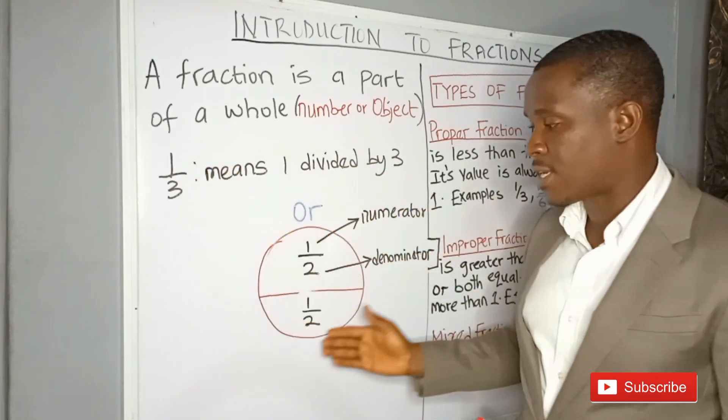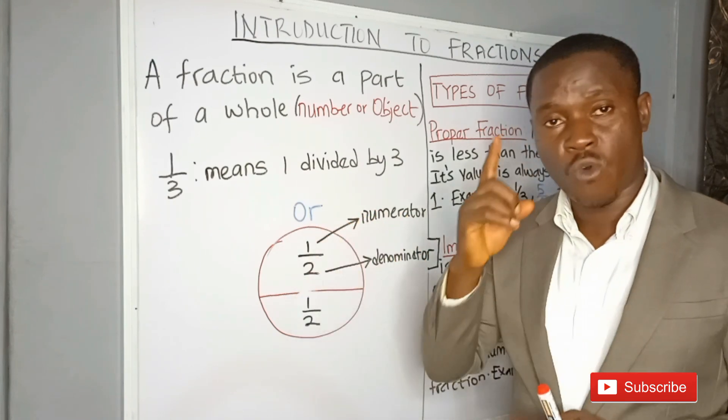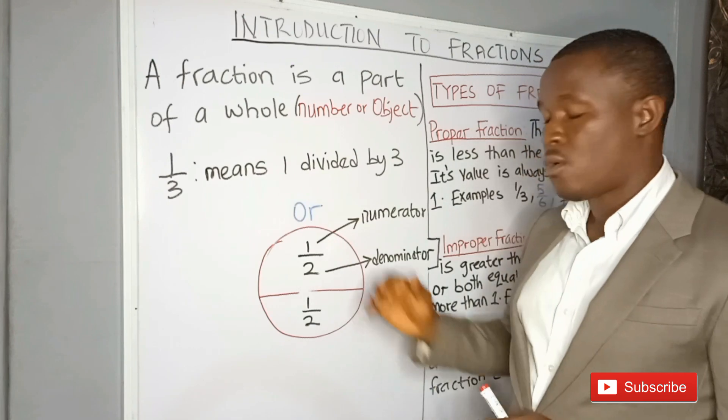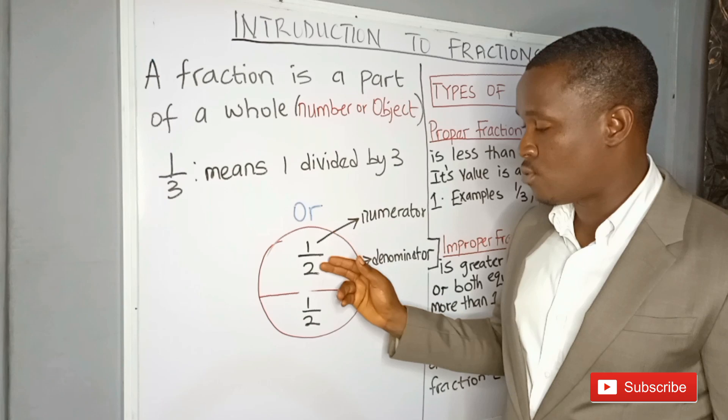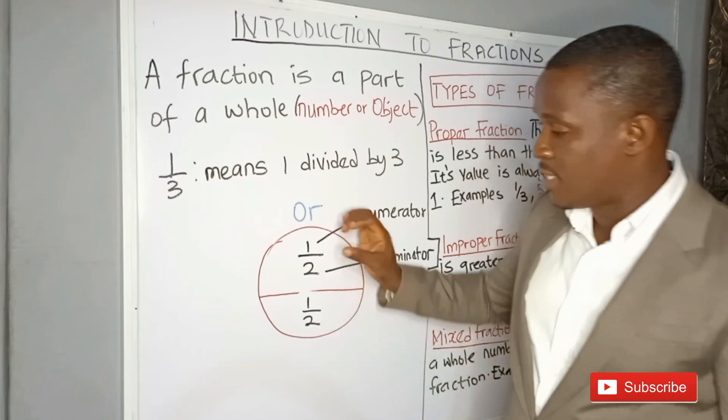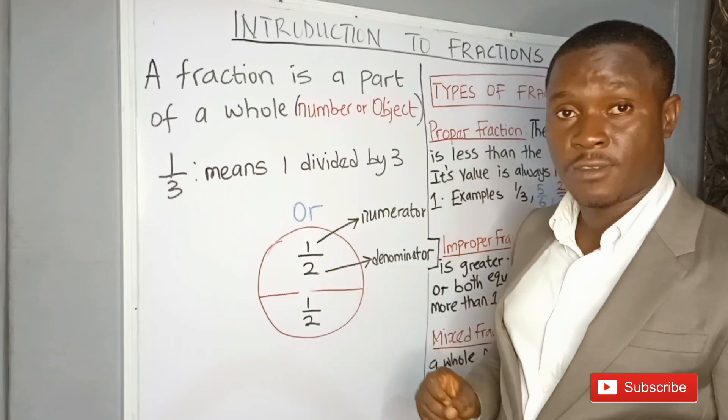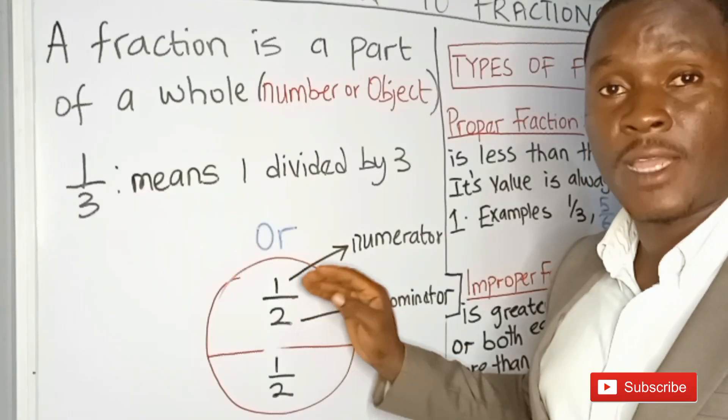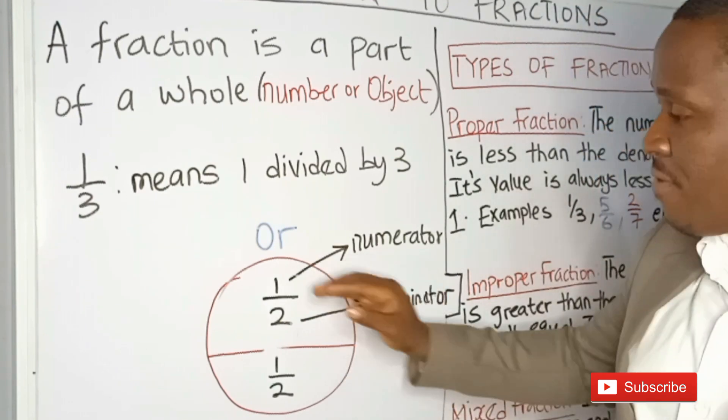We could also have an object. For example, a mother went to the market and bought one orange for her two sons. When she comes back, she is going to share it into two equal parts. One over two, one over two. This means that one orange is shared by two boys. So we have a fraction like this.